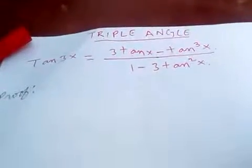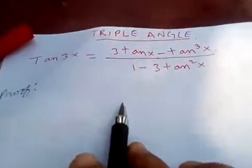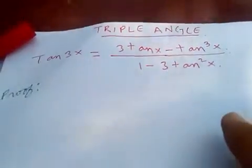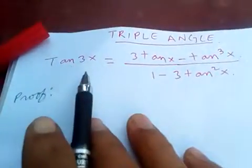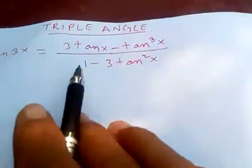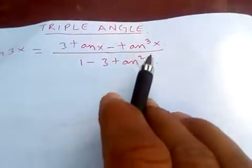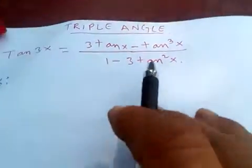Hi friends, today I'm going to prove the triple angle formula for tangent. Tangent of 3x equals 3 tan x minus tan³x over 1 minus 3 tan²x.